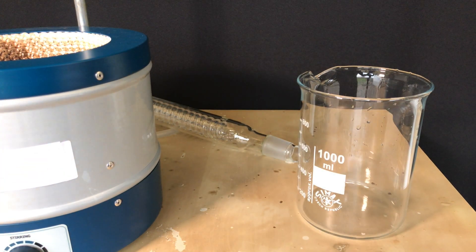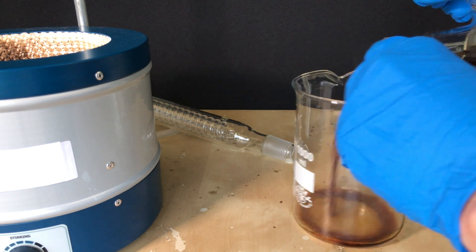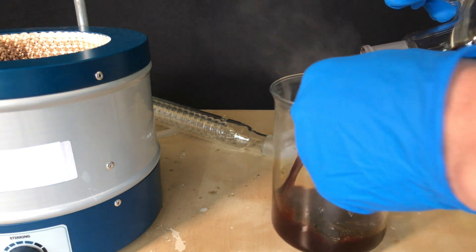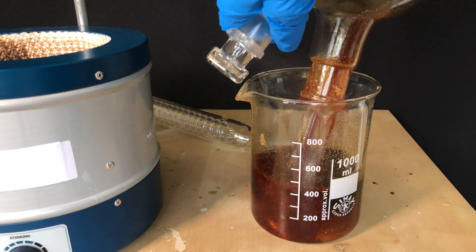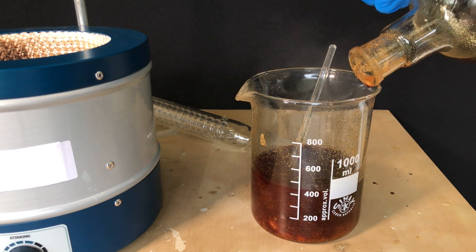We let the flask stand for about 15 more minutes to let it cool down. Then everything was transferred to a beaker. To get all of the powder over into the beaker, the flask was rinsed a few times using the brownish solution.